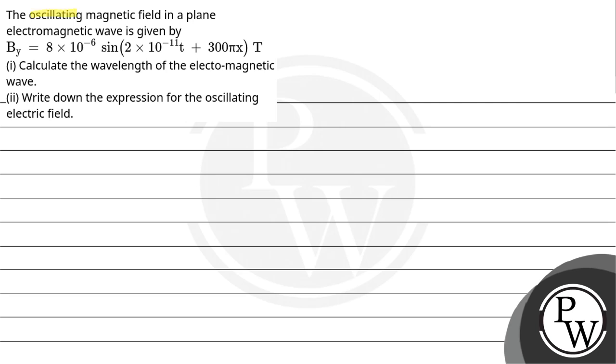Let's read the question: the oscillating magnetic field in a plane electromagnetic wave is given by By = 8 × 10^-6 sin(2 × 10^-11 t + 300πx) Tesla. First, calculate the wavelength of the electromagnetic wave. Second, write down the expression for the oscillating electric field.